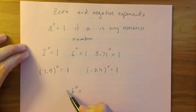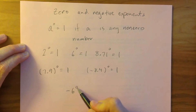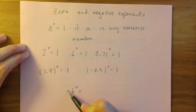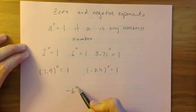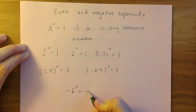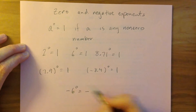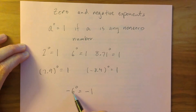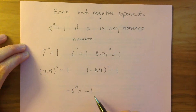And negative 6 to the power of zero — remember that this exponent is not being applied to the negative. So first we apply it to the 6: we get 6 to the zero is 1. So the answer of negative 6 to the zero is going to be negative 1.